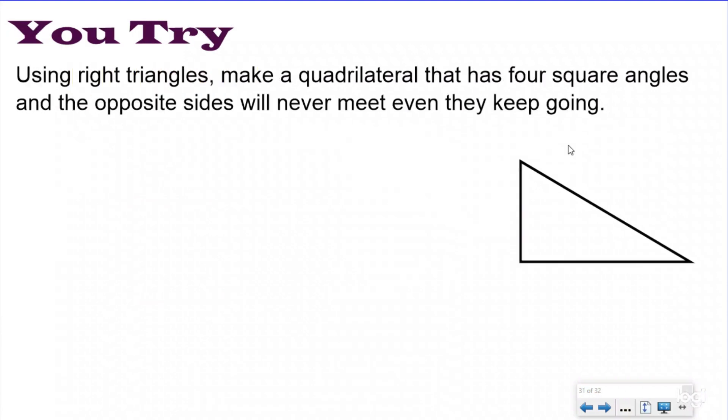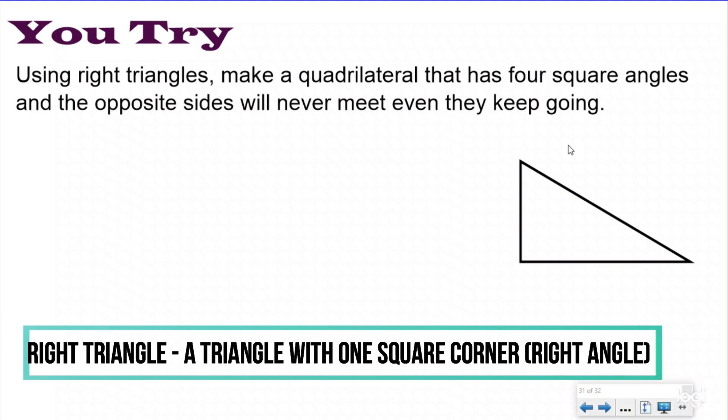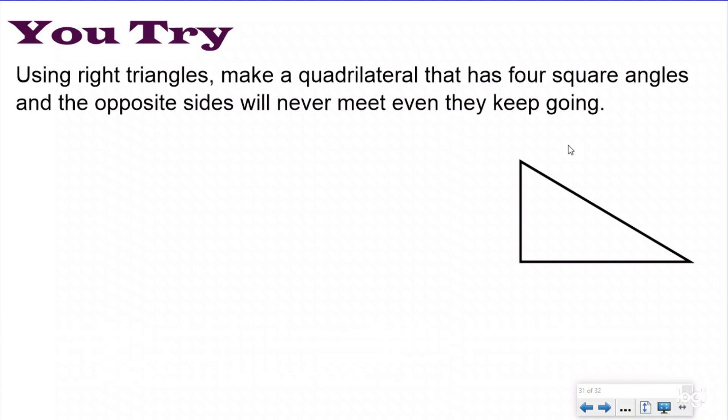Here's our You-try problem. It says using right triangles, make a quadrilateral that has four right angles and the opposite sides will never meet even if they keep going. I want you to pause the video and try this problem. This is on your notes. If you don't have your notes, you can check in the description of the video.